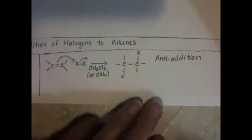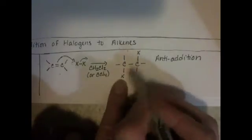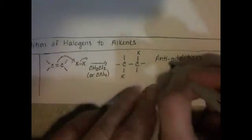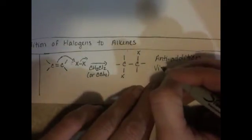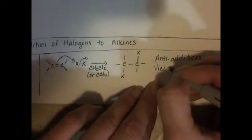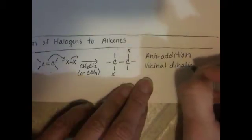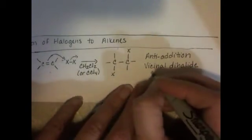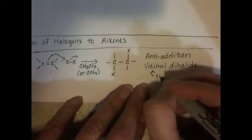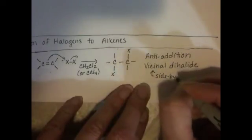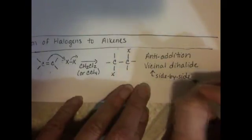And the halogens end up going on to the molecule anti. So it's an anti-addition reaction. And the product of this reaction with two halogens on side-by-side or adjacent carbons is called a vicinal dihalide. Vicinal is a word that just means side-by-side. So vicinal dihalide means that you have halogens on side-by-side carbons.